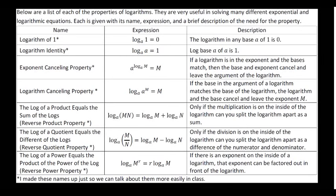The next two properties are what I like to call the canceling properties, and specifically these are used for solving equations. And what it says is that if I have a base and a logarithm in the exponent and they match, then this entire part can cancel, leaving only the M. The logarithm canceling property is the same, where we have the log on the outside, the base on the inside, they cancel, and you're left with just the M.